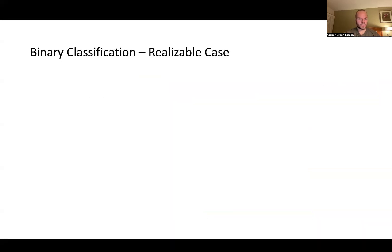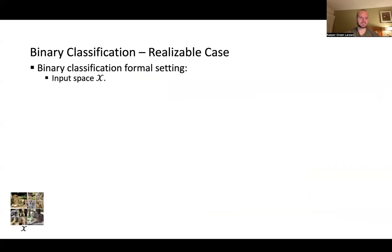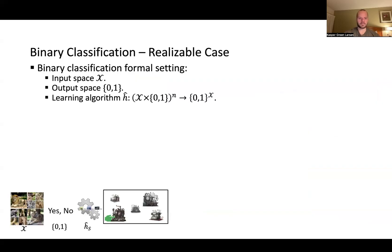Let's be more formal and introduce some notation. In general, there's an input space X — for example, all images of animals — and an output space of 0 and 1. A learning algorithm is basically a function H-hat that takes in n labeled examples — an input element and its corresponding label — and outputs a predictor, a function from the input domain X to zeros and ones.